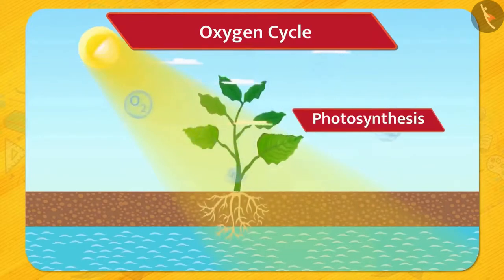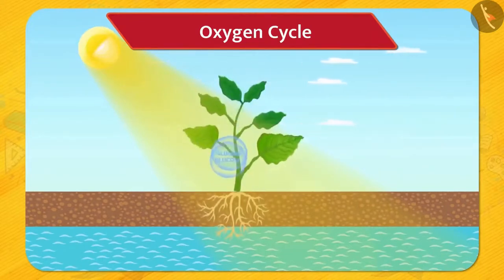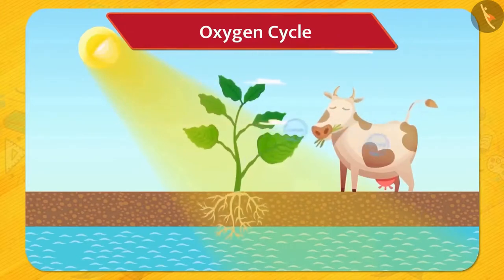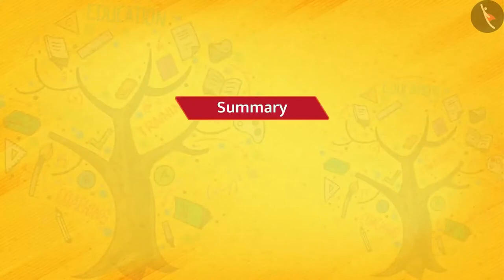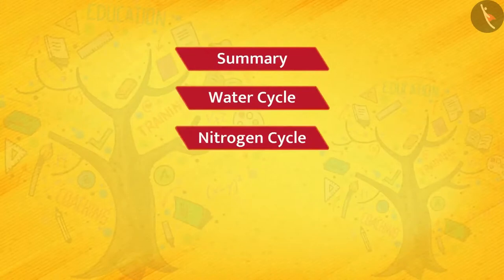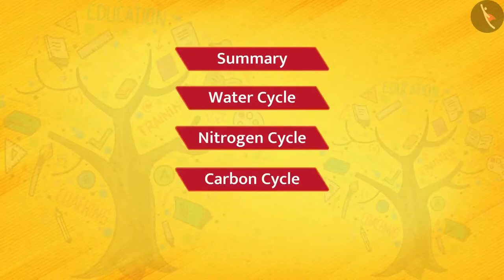Plants store their food in the form of glucose, which also contains oxygen in it. When an animal consumes the plants, glucose enters into the animal's body and again they release carbon dioxide during respiration. Hence, in this way, oxygen is absorbed from and released into the atmosphere and its percentage remains constant. So friends, in this video you learned about the water cycle, nitrogen cycle, carbon cycle and oxygen cycle.